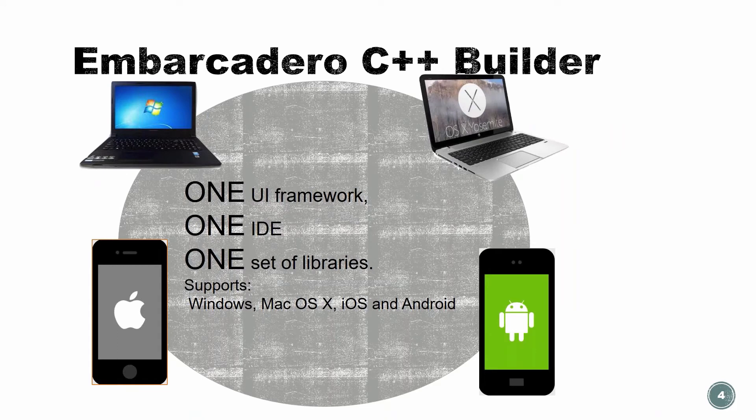A few more words about C++ Builder. The programming itself is done on a Windows machine — that's one of the requirements, you all need a Windows machine to download it. But once the program is done and ready, we can deploy it on different kinds of systems. In one builder, we can write programs that support different frameworks like Android and iPhone, and operating systems like Mac and Windows.